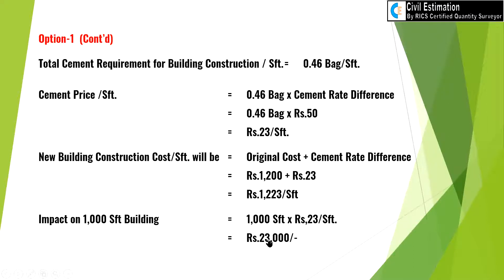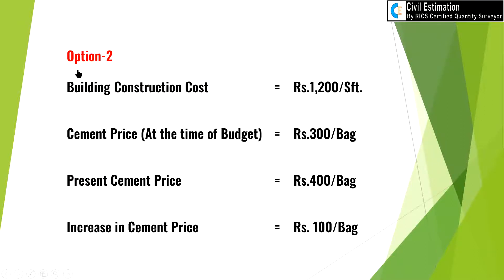If the cement rate is increased by 50 rupees per bag, the overall impact on a 1000 SFD building is 1000 multiplied by 23 rupees per SFD, which equals 23,000 rupees. Now Option 2: the initial building construction cost remains 1200 rupees per SFD, and cement price at budget time was 300 rupees per bag. After six months, cement price became 400 rupees per bag — a difference of 100 rupees per bag.